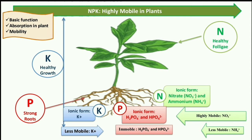Regarding mobility, NO3 negative is highly mobile in soil and NH4 positive is less mobile. So we can say that the negative form (nitrate) is highly mobile in soil, while the positive form (ammonium) is less mobile.